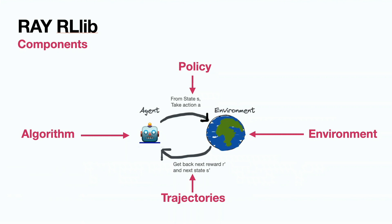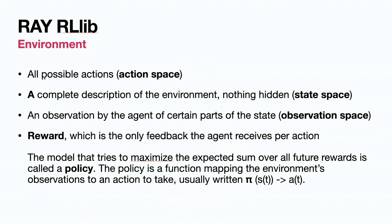First is environment. Environment consists of all possible actions, called action space. A complete description of the environment — all possible states where the agent could reside in — is called state space. An observation by the agent of certain parts of the states is called observation space. There is also a reward, which is the feedback for a particular action of the agent.